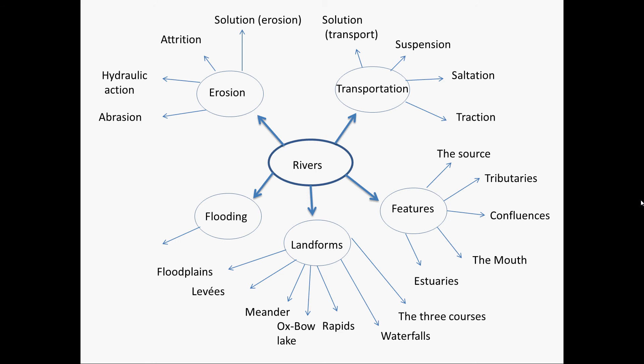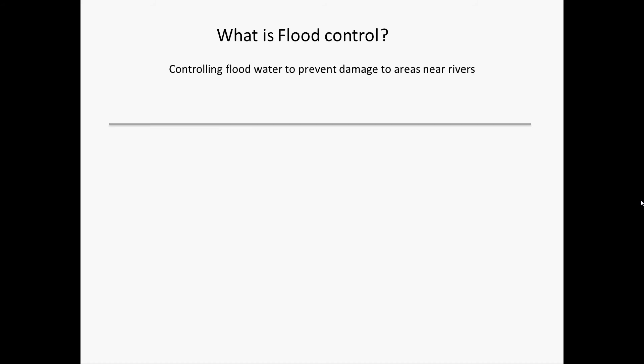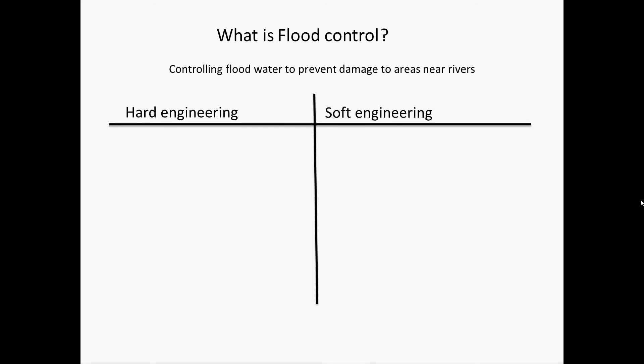Last time we looked at Flooding and the Storm Hydrograph. Flood Control is controlling flood water to prevent damage to areas near rivers. It is split into two parts: Hard Engineering and Soft Engineering.